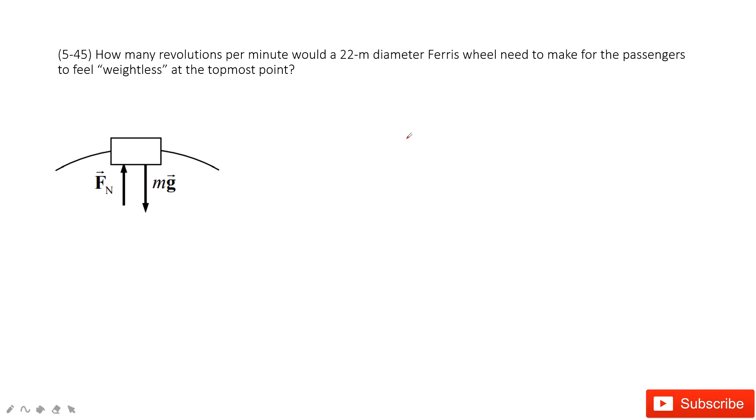We need to find how many revolutions per minute. What does that mean? It means you need to find velocity, because revolutions per minute is how fast the circular motion is - velocity.